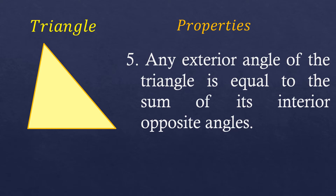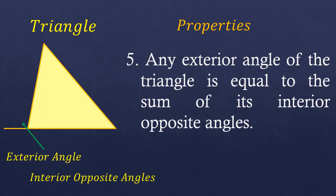So where is this exterior angle, and where are these interior opposite angles? The position of the interior opposite angles depends on where your exterior angle is. Let's say we extend a small line here so that we have an exterior angle. The interior opposite angles will be these two angles. So in this property, if you add these two interior opposite angles, it's always equal to the exterior angle.